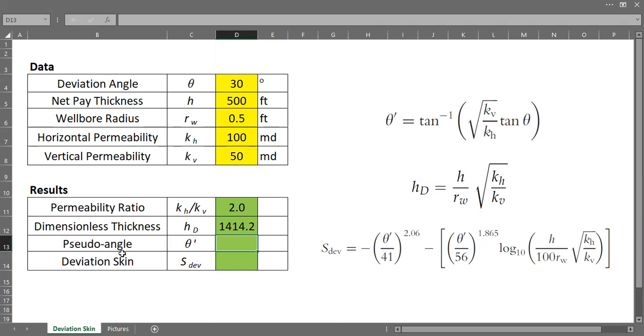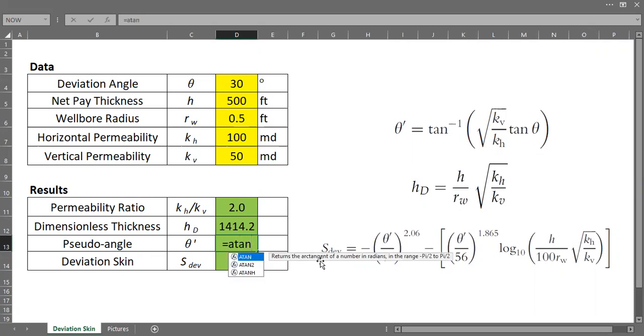And now, we need to calculate the pseudo angle. This is the formula. It will involve inverse tangent. But you need to be careful. To be consistent, we need to remember that the angle is in degrees. So first, I will calculate the arc tangent. And we can do that by using this formula. ATAN returns the arc tangent of a number in radians, in this range. So this calculation will give us a number in radians. And later on, we need to calculate that radian number to degree.